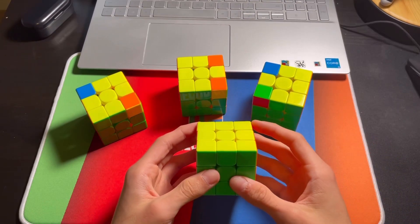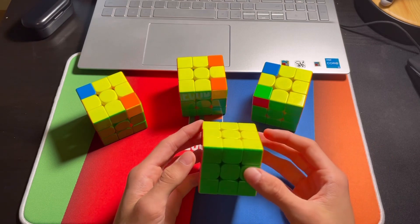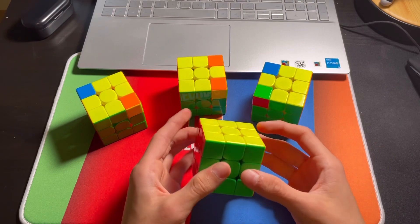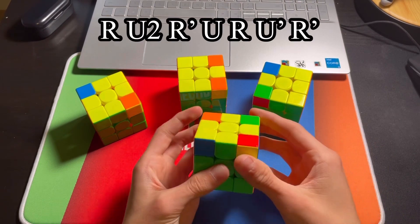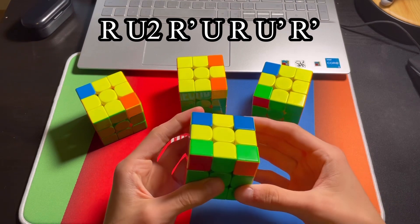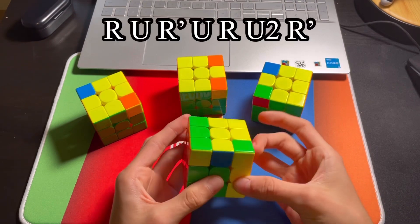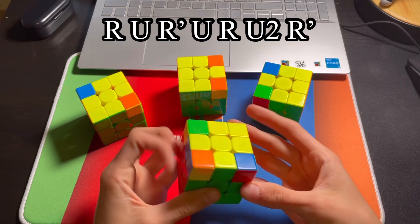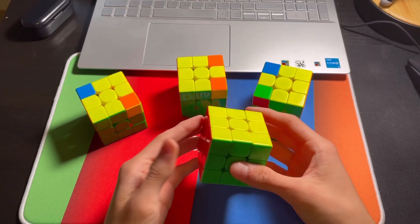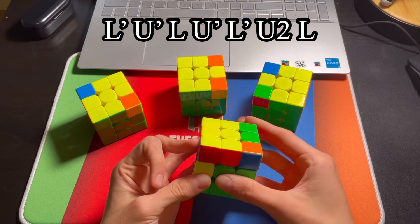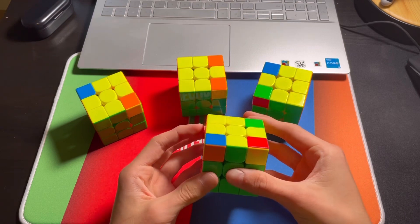There's a few algorithms you're going to need to know beforehand, but these are all just basic OLLs that most people already know. The first one is anti-sune, the second one is sune, and then you also need to know these from the left side, so this is lefty sune, and lefty anti-sune.